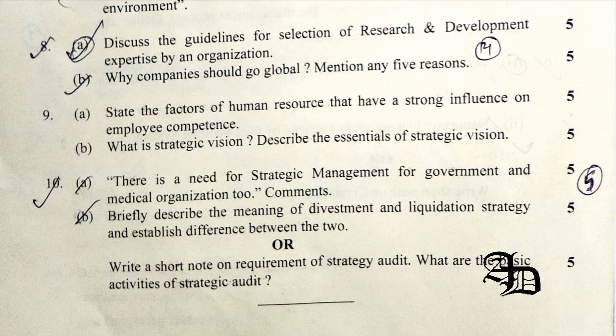The next question asked for a short note on the requirements of a strategy audit and the basic activities involved. A strategy audit is needed when performance indicators reflect that the strategy is not working properly, when the rules and objectives of the strategy are not being accomplished, and when top management plans are not taking place properly. The three basic activities involved are: examining the underlying basis of the firm's strategy, comparing expected results with actual results, and taking corrective actions to ensure performance confirms the plan.